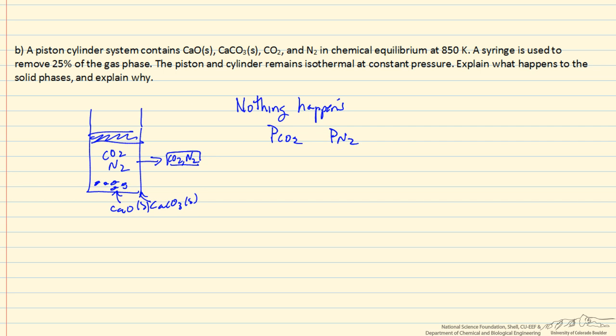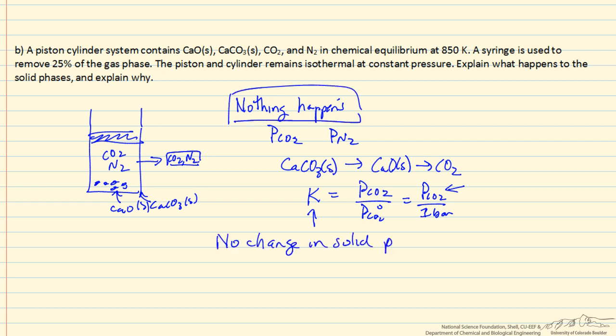At equilibrium, the equilibrium constant for the reaction of calcium carbonate decomposing is just the pressure of CO2 divided by the pressure of CO2 at standard conditions, which is 1 bar. So it's the pressure of CO2 over 1 bar. Equilibrium constant has not changed, therefore the partial pressure has not changed, and therefore we see no change in the solid phases.